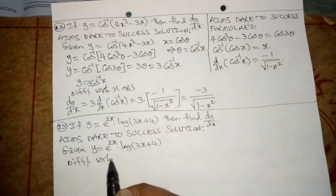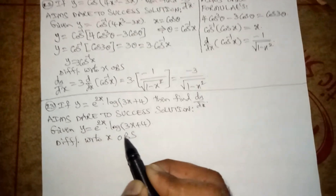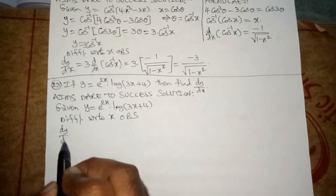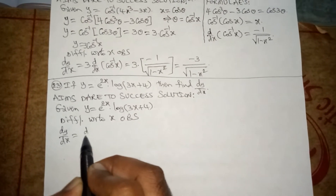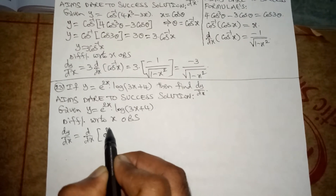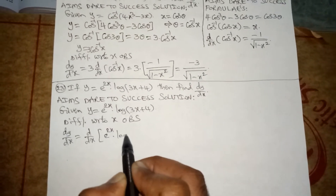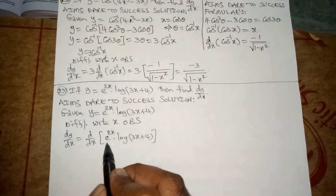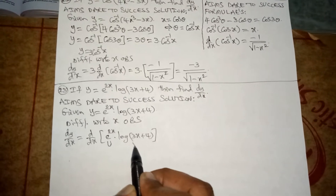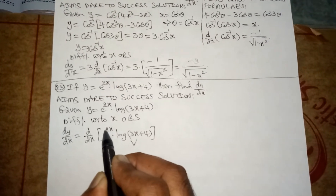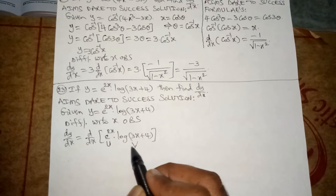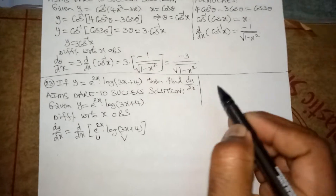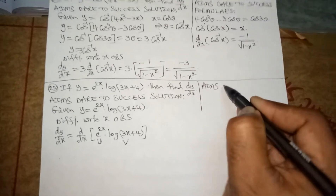Differentiating with respect to x on both sides, we get dy/dx is equal to d/dx of e^(2x) · log(3x + 4). It is in the form of d/dx of u·v, where u value is e^(2x) and v value is log(3x + 4). Now I wanted to write formulas.